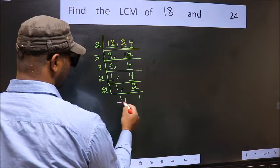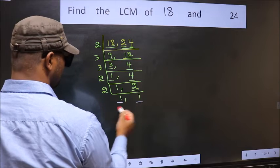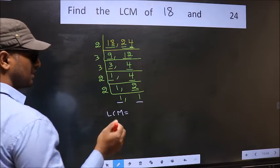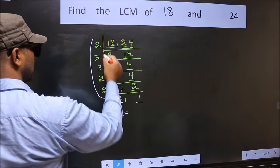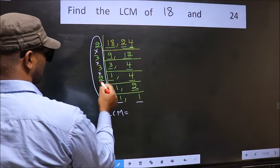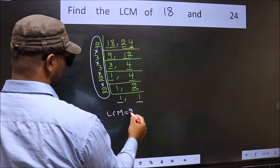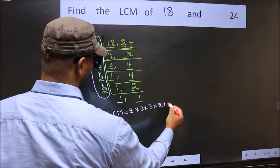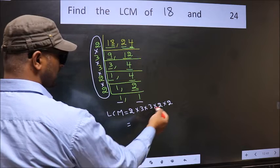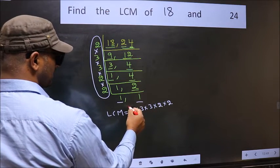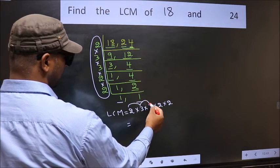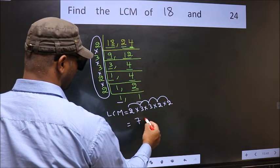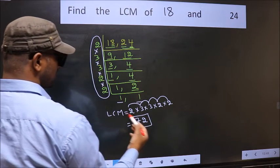So we got 1 in both places. Our LCM is the product of these numbers: 2 times 3 times 3 times 2 times 2. Let us multiply these numbers: 2 times 3 is 6, times 3 is 18, times 2 is 36, times 2 is 72. So 72 is our LCM.